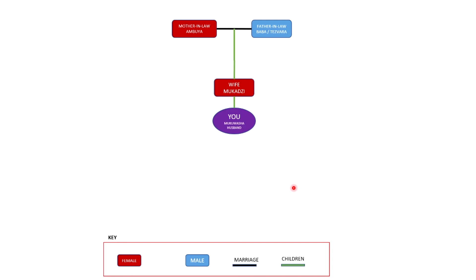We're going to start with your wife's parents. Your wife's mother, which is your mother-in-law, you address as Ambuya. Your wife's father, which is your father-in-law, you're going to address as Baba or Tejara. I hope that's clear.